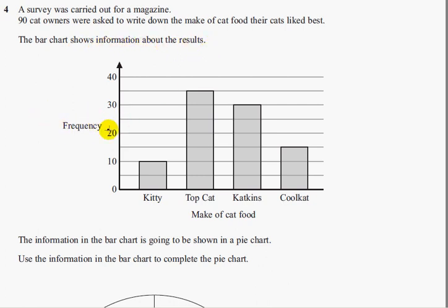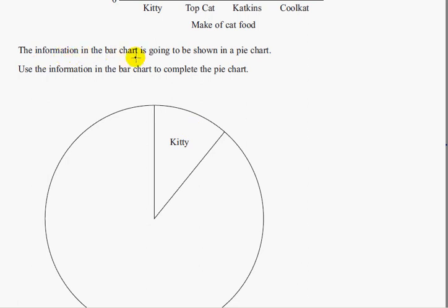So you've got frequency, how many people, and you've got 4 brands: kitty, top cat, catkins and cool cat. The information in the bar chart is going to be shown in a pie chart. Use the information in the bar chart to complete the pie chart.